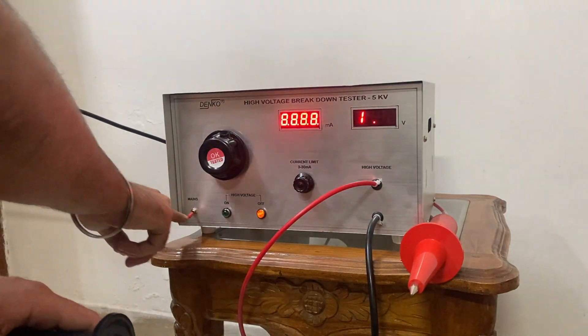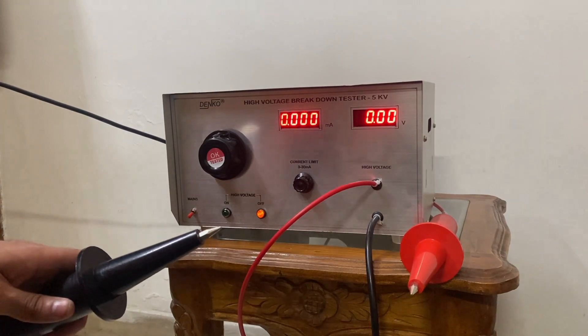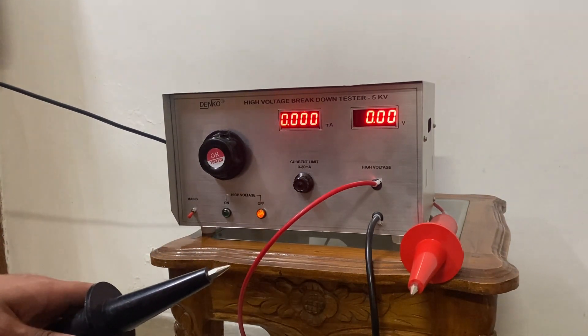Hello everyone, today we are going to showcase a Denko made high voltage breakdown tester rated at 5 kV 30 mA.